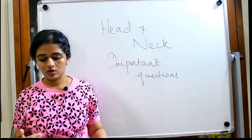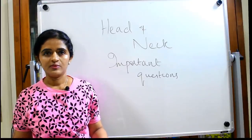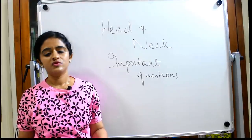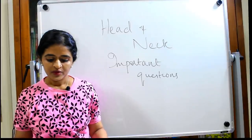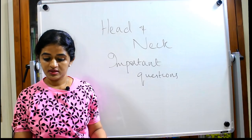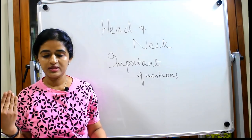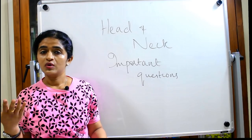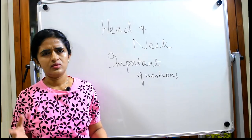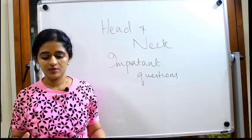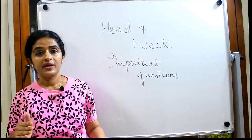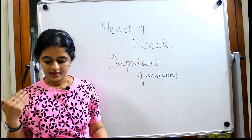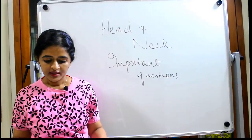Coming to chapter 3 — scalp, temple, and face. Scalp is a favorite question for both essay and short note. The definition and extent, layers of scalp, blood supply, and nerve supply can all be asked as a diagram, short note, or essay. Scalp is very very important — please don't skip this portion. Also know the applied anatomy of scalp, including the dangerous layer.